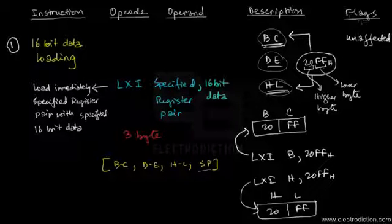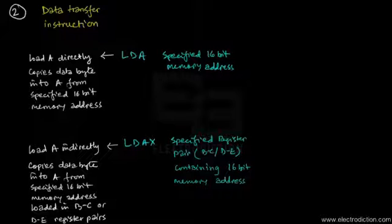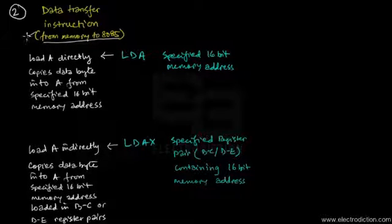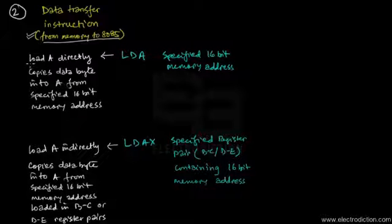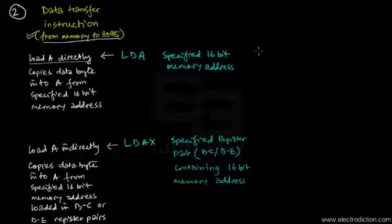Next, we come to the data transfer instructions. We have two instructions that copy or transfer the data byte from the memory to the 8085. The first instruction is LDA, which stands for load the accumulator directly. Its main operand is the specified 16-bit memory address, from which the instruction directs the 8085 to copy the data byte into the accumulator register.